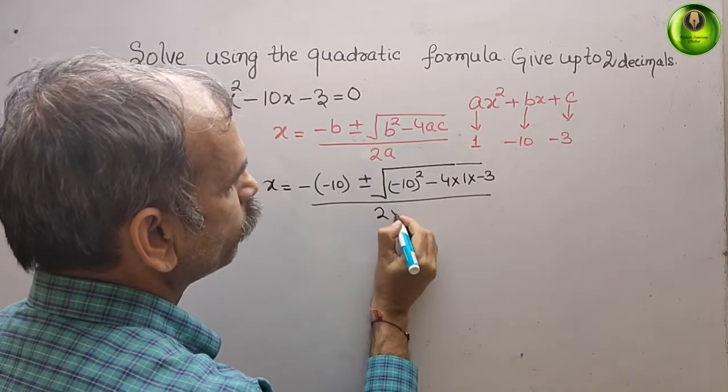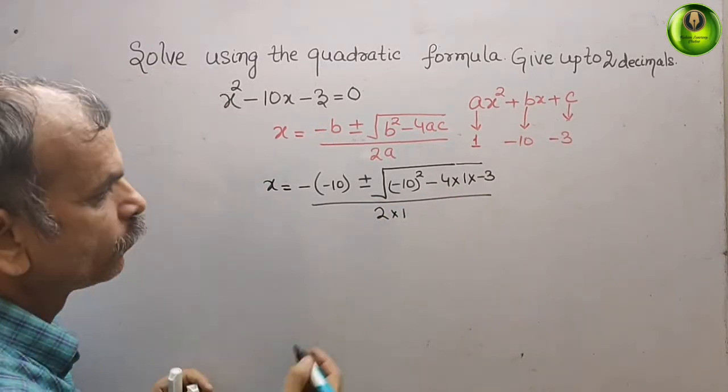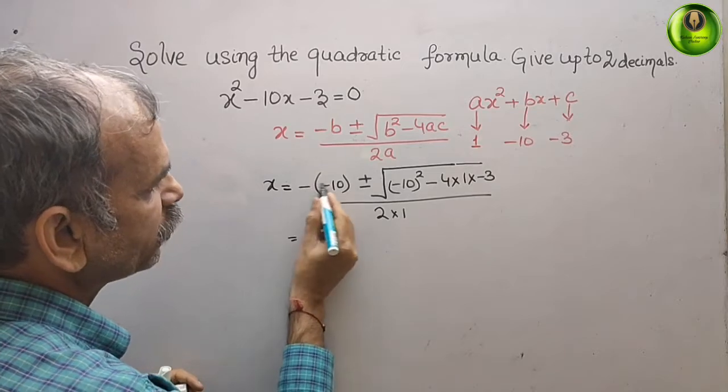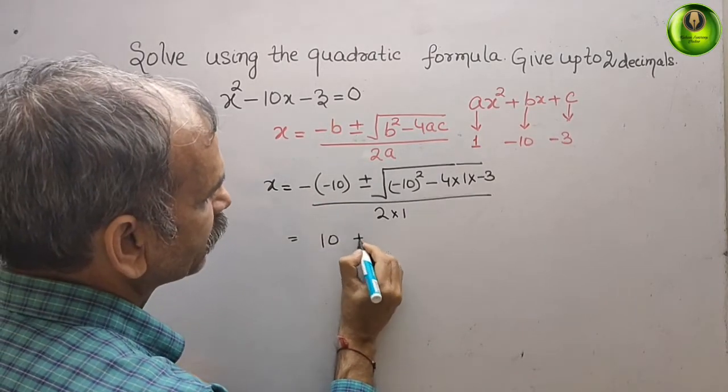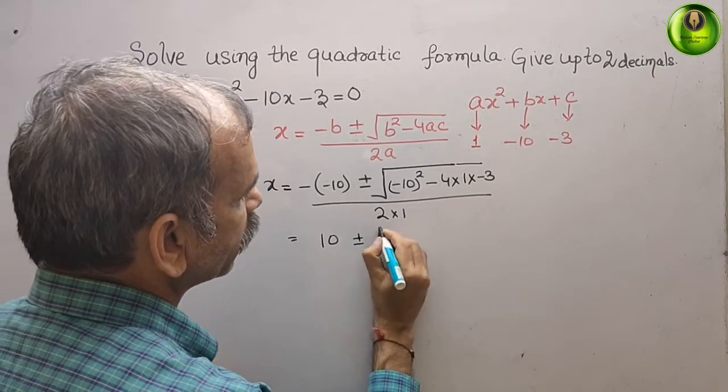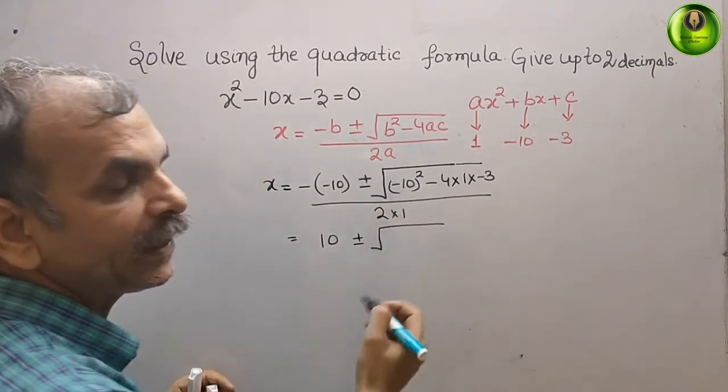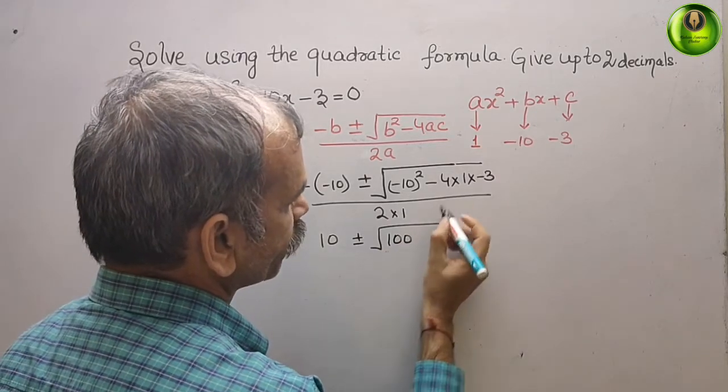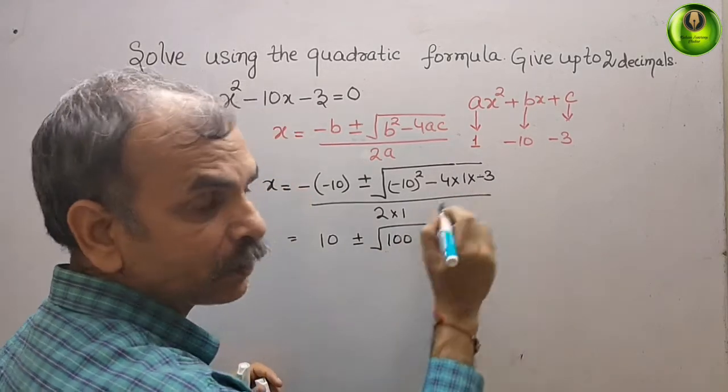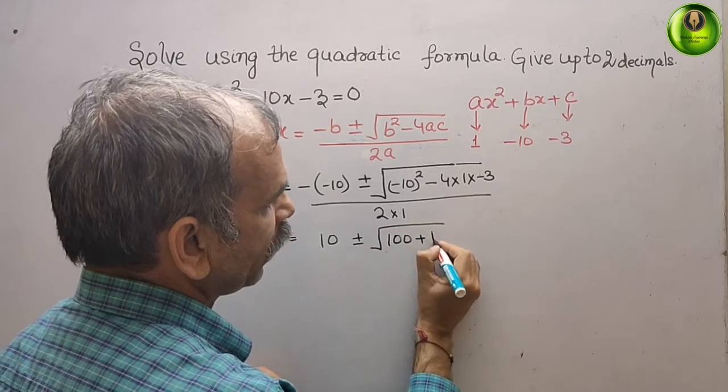This gives 10 ± √(100 + 12) / 2, which equals 10 ± √112 / 2.